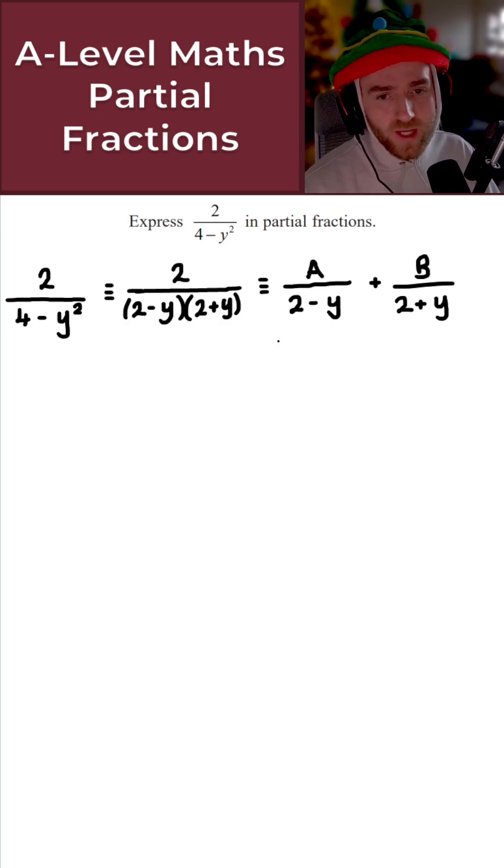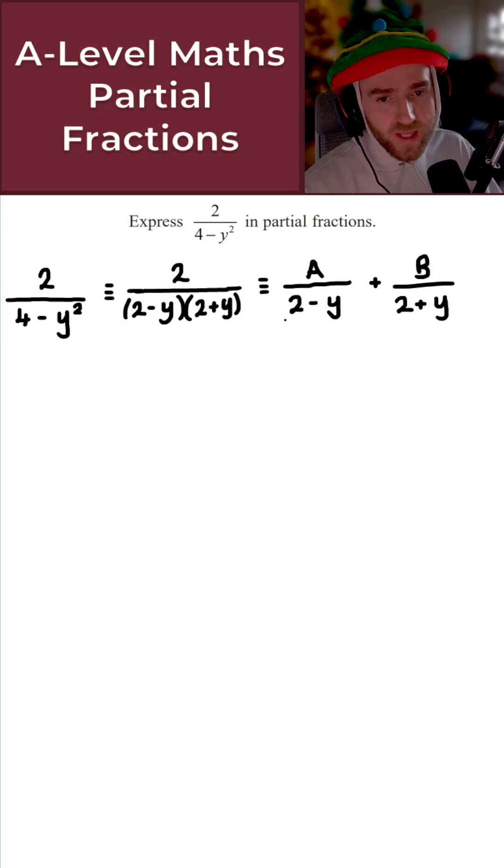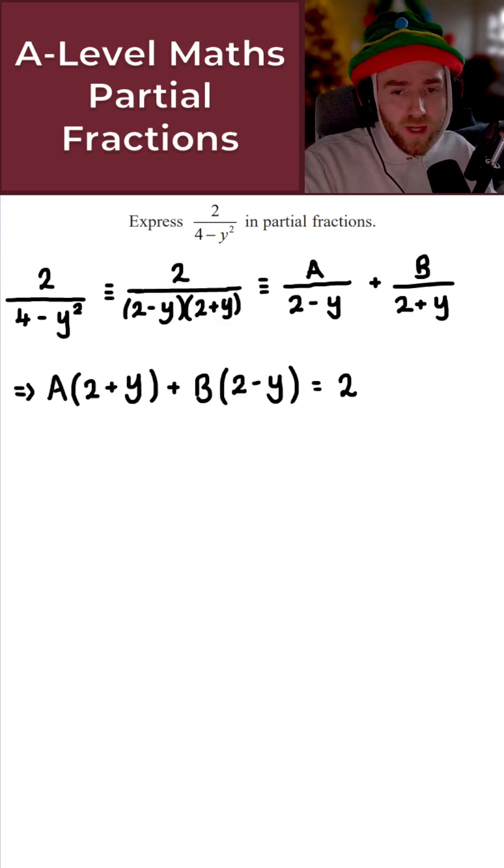So what I now want to do is take what I've got here and express this as a common denominator. The common denominator will be the exact same as what I've got here in the middle, which means the denominators will be the same. And in that case, if the denominators are the same, the numerators must also be the same. So let's get this over a common denominator. I won't actually bother writing down the common denominator. As I said before, it is just going to be 2 minus y times 2 plus y.